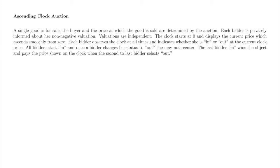Here is a fairly formal description of the ascending clock auction. Bidder's types are privately known and independently distributed. Every bidder sees the clock price, which starts at zero and increases smoothly. The clock price represents the price the winner would pay if the auction ended right now.